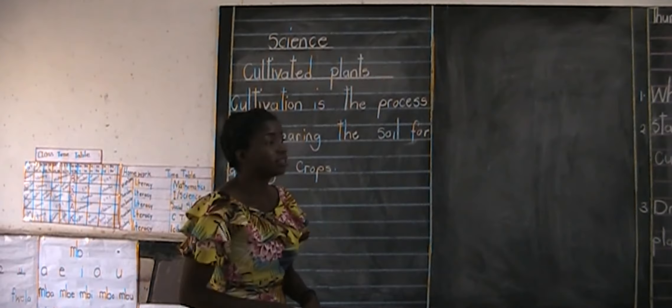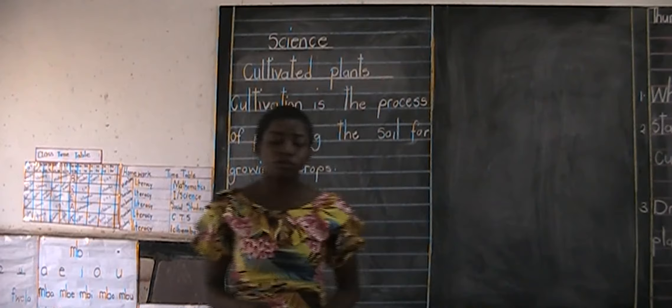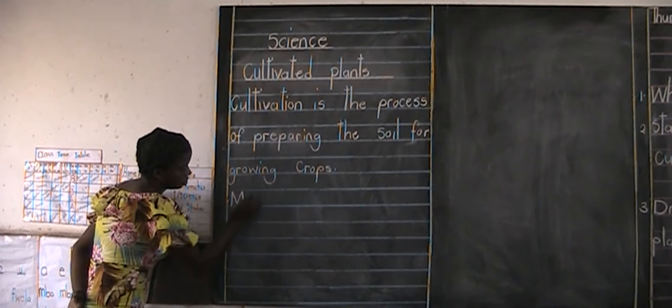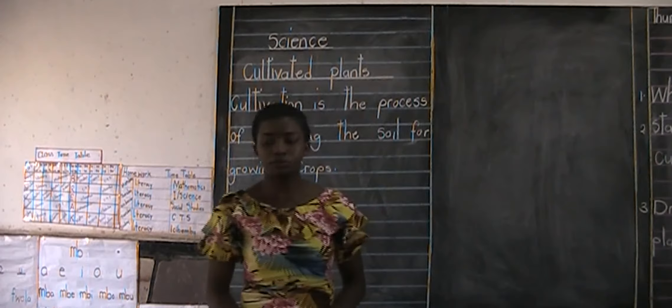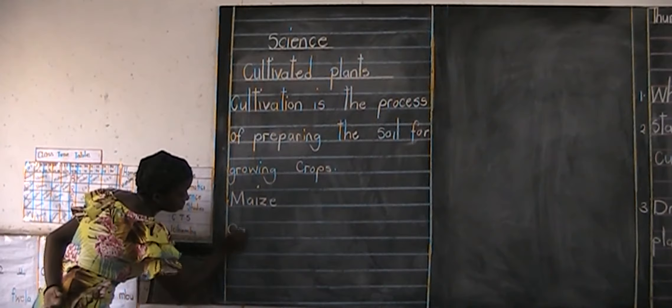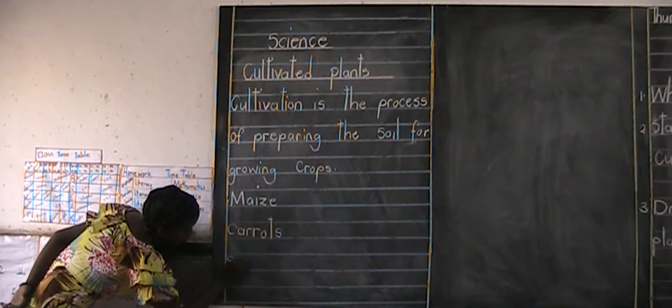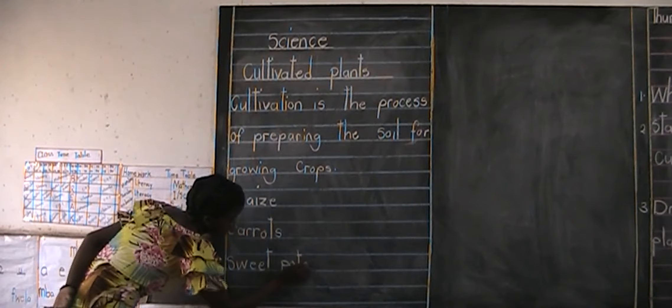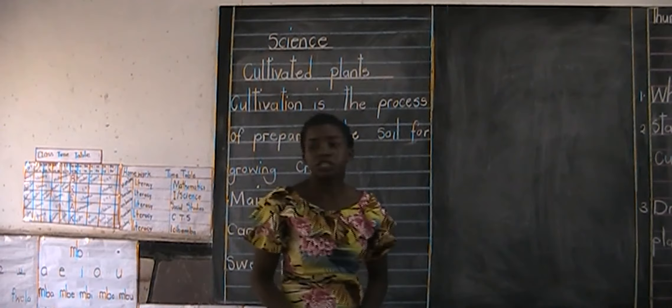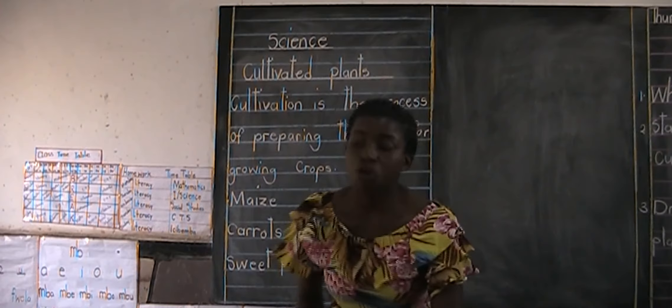Anyone? Very good. So I think someone said mints. So we have mints. What else? We have carrots. Very good. What else? We have sweet potatoes. So we have got a lot of different types of crops that we plant. These are cultivated plants, because we grow them and when they are ready we harvest them and we eat them.